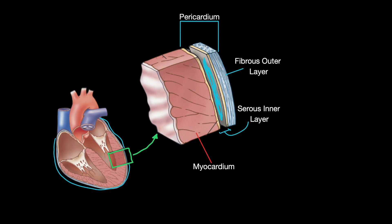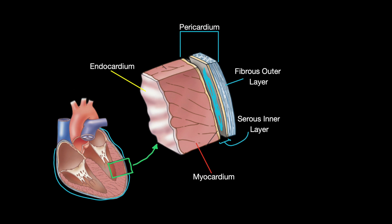The serous layer holds the pericardial fluid, which reduces friction when the heart beats. The second and thickest layer is the myocardium — the muscular layer of the heart that contracts and releases involuntarily. This layer is responsible for keeping the heart pumping blood all over the body. Lastly, there is the endocardium, the innermost layer of the heart. It lines the inner surfaces of the heart chambers including the heart valves, and ensures that blood flow is separated and organized from the other layers.